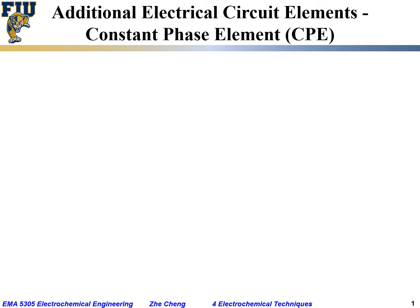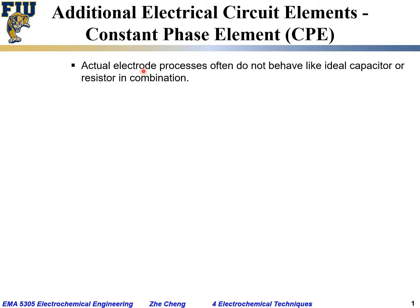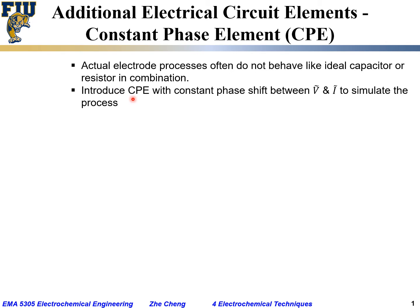Let's look at some additional electrical circuit elements. The first one is the so-called Constant Phase Element, or simply CPE. Researchers have used resistors and capacitors to simulate electrode processes such as charge transfer resistance and electrical double layer capacitance. However, the actual electrode process sometimes does not behave just like a pure or ideal capacitor or ideal resistor. The actual electrode is more complex than what you can get by combining a perfect capacitor and perfect resistor.